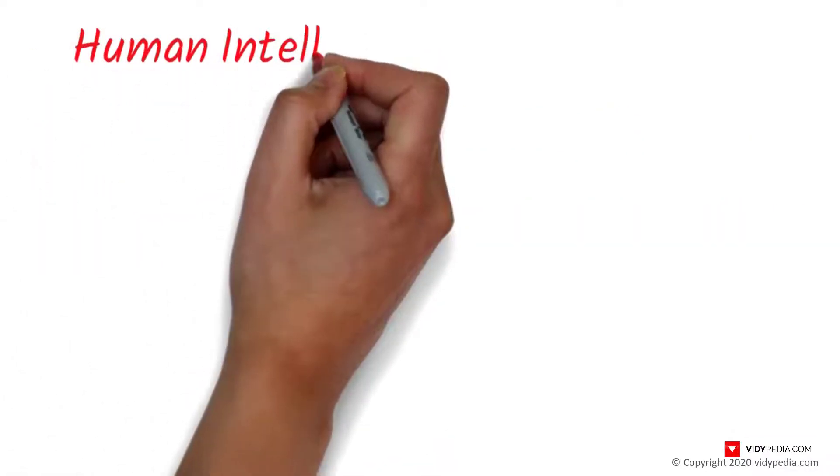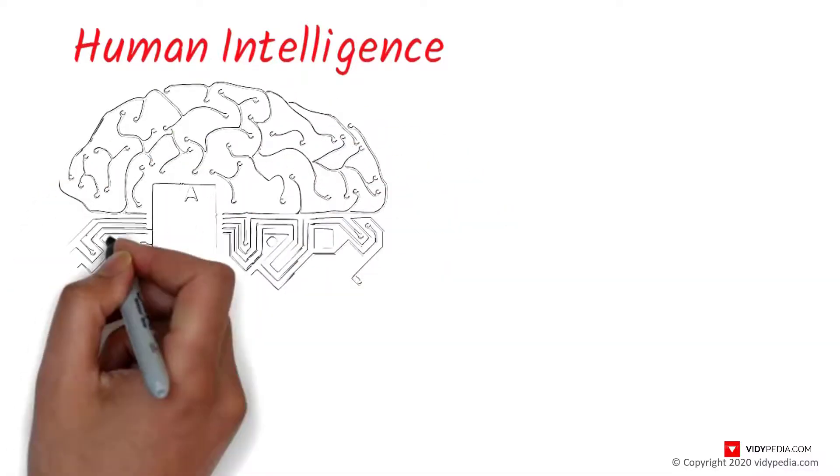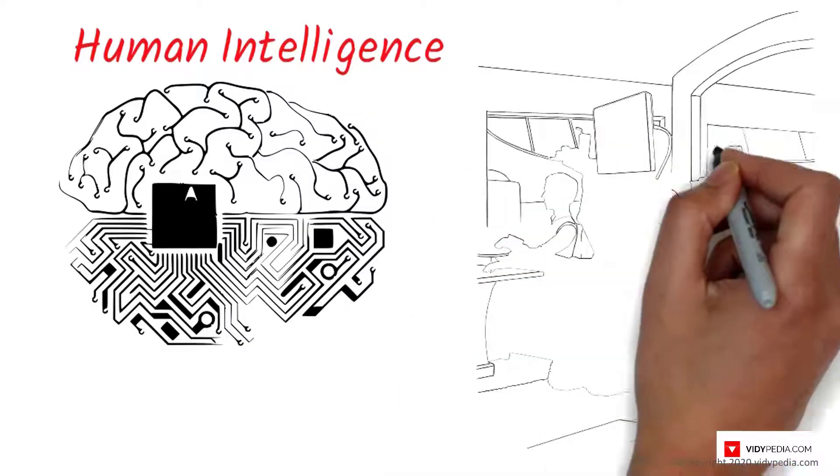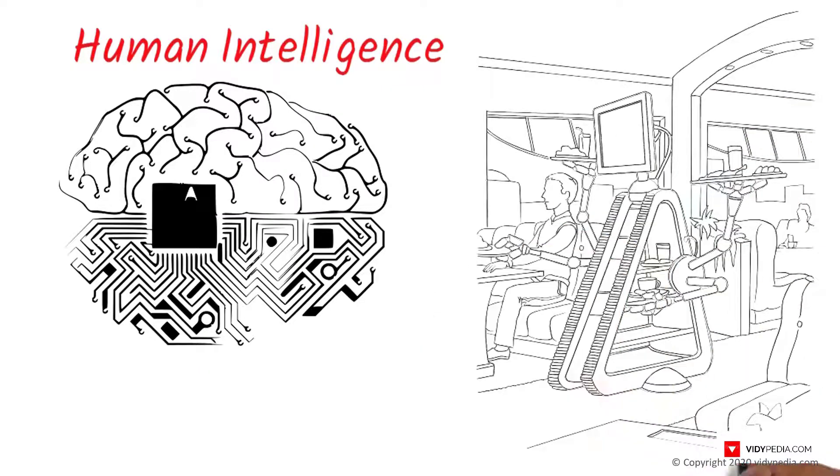The field was founded on the assumption that human intelligence can be so precisely described that a machine can be made to simulate it. This raises philosophical arguments about the nature of the mind and the ethics of creating artificial beings endowed with human-like intelligence.